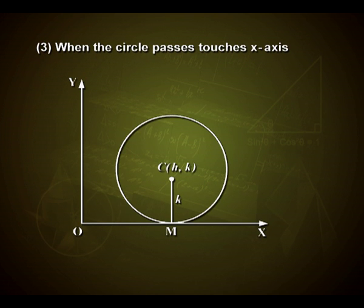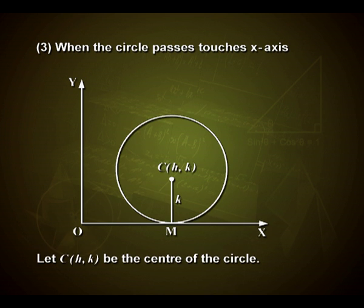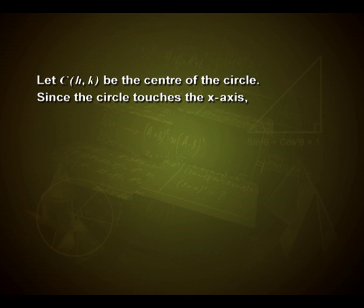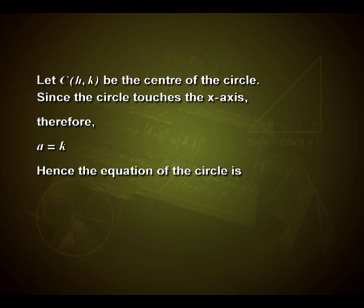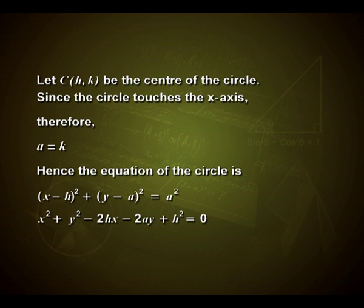In the third case, when the circle touches the x-axis: let (h, k) be the center of the circle. Since the circle touches the x-axis, a = k. Hence the equation of the circle is (x - h)² + (y - a)² = a², which simplifies to x² + y² - 2hx - 2ay + h² = 0.